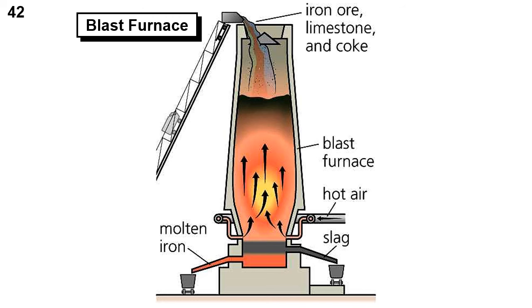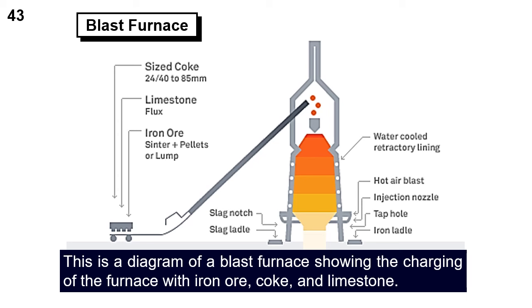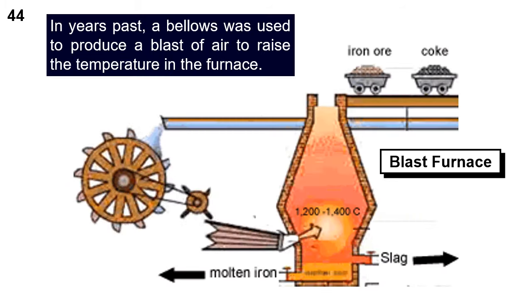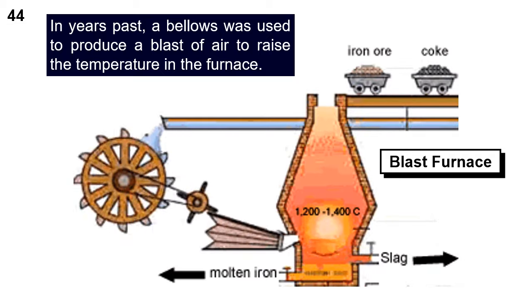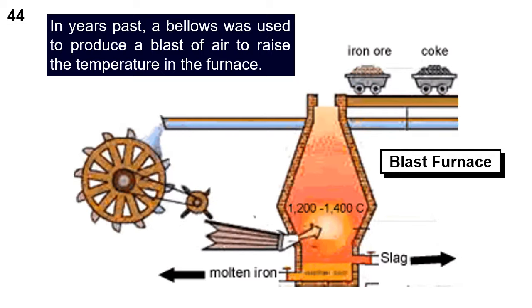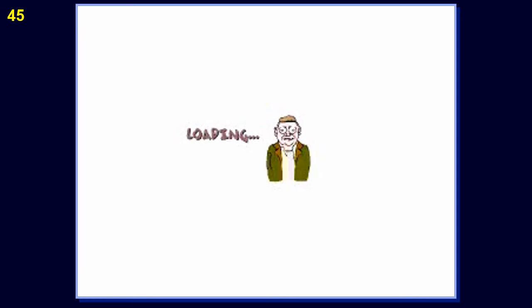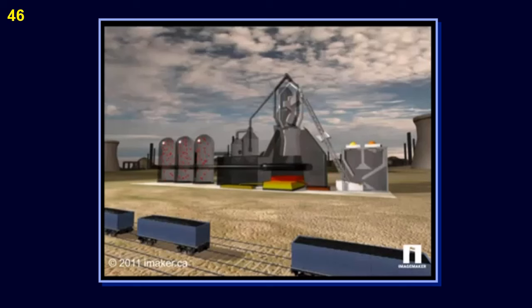This is a diagram of a blast furnace showing the charging with iron ore, coke, and limestone. In years past, a bellows was used to produce a blast of air to raise the temperature in the furnace. This is an animation of the operation of a blast furnace, followed by a short video of the operation of a blast furnace.